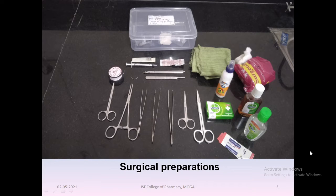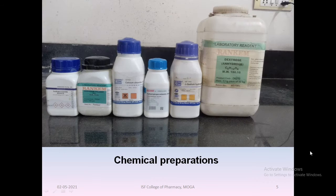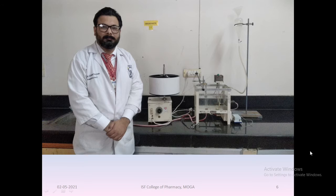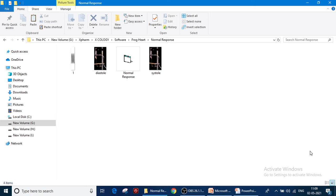These are the surgical preparations that you need to follow. For glassware preparations, before starting the experiment, ensure that you have prepared and managed all types of preparations related to glassware, equipment, apparatus, and chemicals. These are the chemicals that we will use to form the frog Ringer solution. The software that I am going to present is Xform software. So let's start with this experiment.